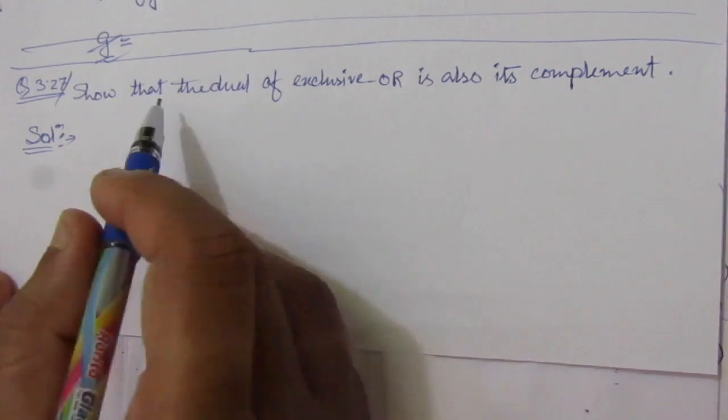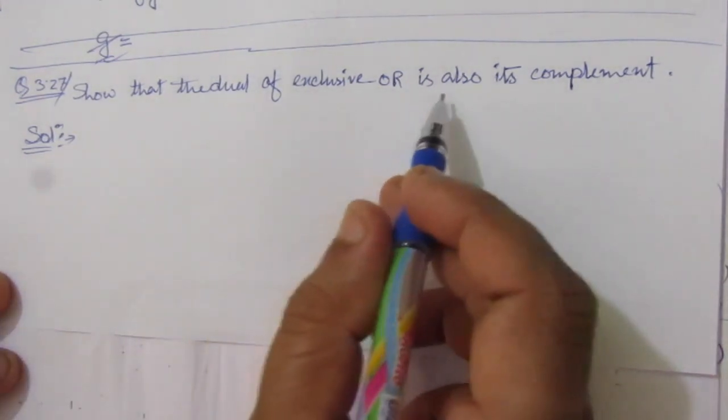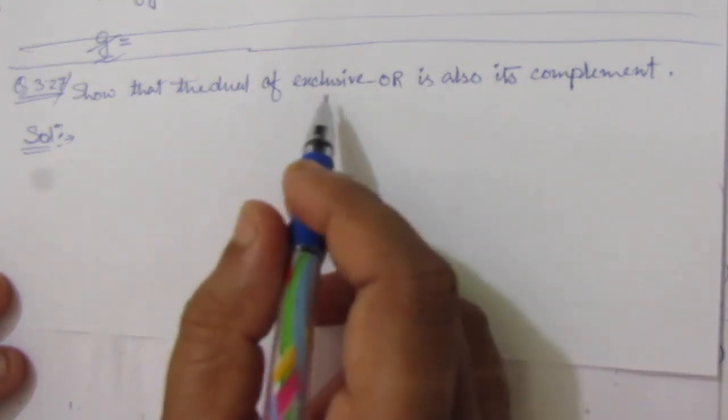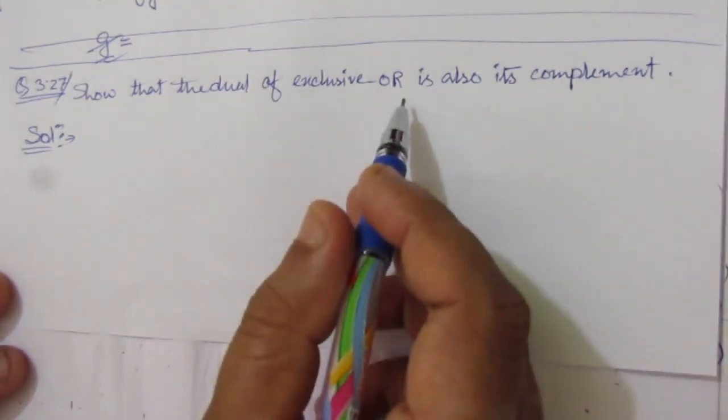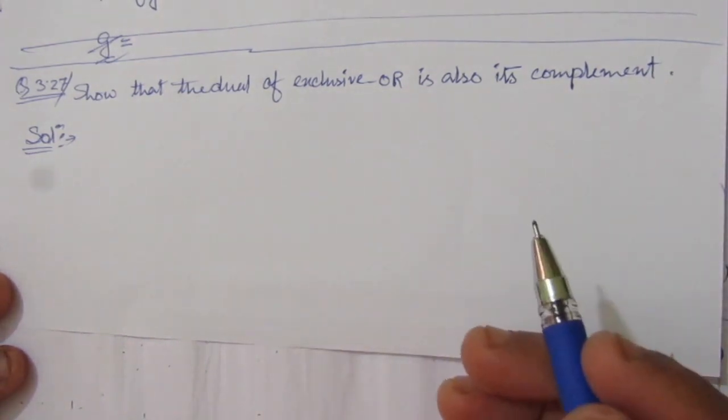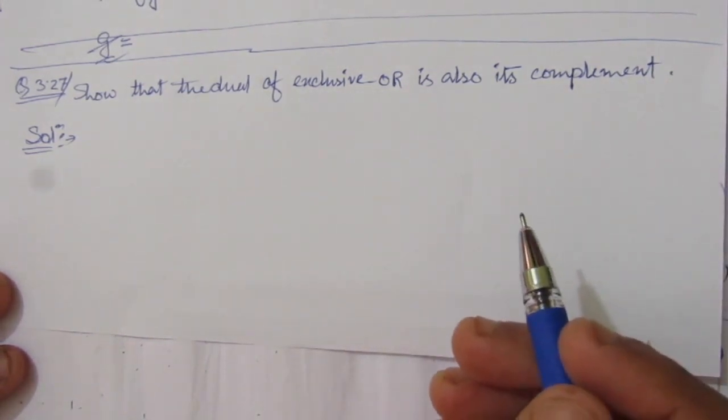The problem is to show that the dual of the exclusive-OR is also its complement. That means we have to find out the dual of the exclusive-OR and show that it is exclusive-OR's complement.